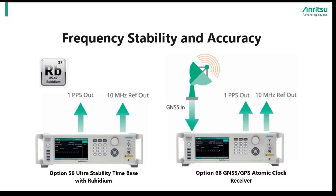It is also useful in situations where a satellite signal is inaccessible for any reason. For customers that can access a GPS GNSS signal and require atomic clock accuracy, such as metrology calibration labs and others, Option 66 is the beneficial choice.